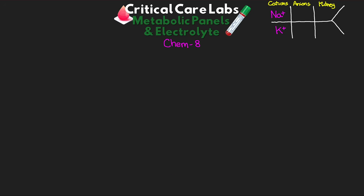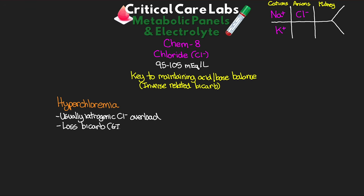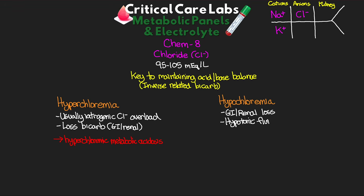On to our next test — chloride. Back to our result skeleton, this one does appear — it's the first anion at the top. Normal chloride is 95 to 105 mEq per liter. Chloride is key to maintaining acid-base balance, as it's inversely related to bicarb. When too high, this is hyperchloremia — usually the result of iatrogenic chloride overload, think our use of normal saline — but can also be from loss of bicarb from either the GI or renal system, and can lead to hyperchloremic metabolic acidosis. When too low, this is hypochloremia, typically due to GI or renal loss or hypotonic fluid dilution, and can lead to hypochloremic metabolic alkalosis.